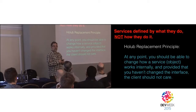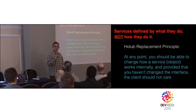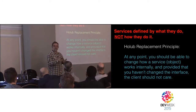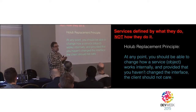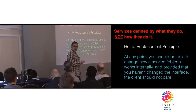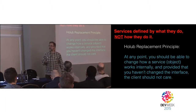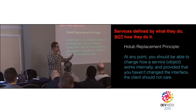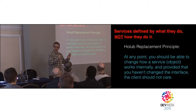For example, if at the domain level you have objects like customers, orders, and line items, inside the program there will be classes like customers, orders, and line items. There will be a one-to-one correlation between the classes in your system and the main abstractions at the domain level. From an agile point of view that's essential because the changes happen at the domain level, and if there's a one-to-one mapping, when a change happens in the domain it's easy to see what you need to modify.